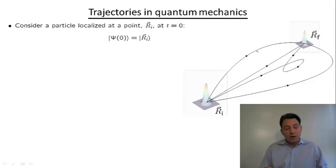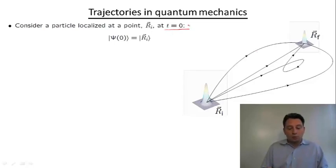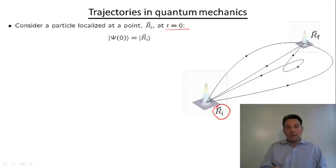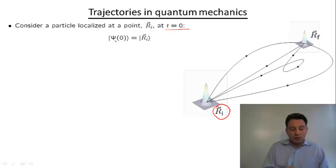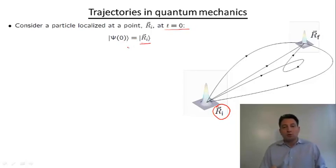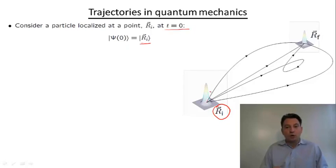Let's assume that at an initial moment of time, t equals zero, our quantum particle was localized in the vicinity of the original point R sub i. By localized, I mean that its initial wave function psi of zero, at t equals zero, is equal to the ket vector R sub i, which represents the eigenvector of the position operator corresponding to this point.